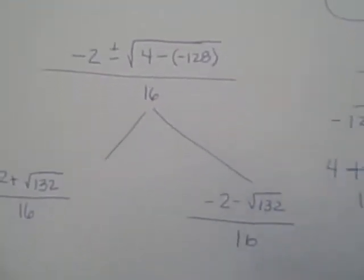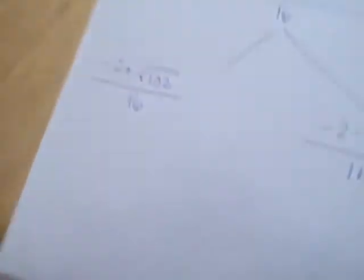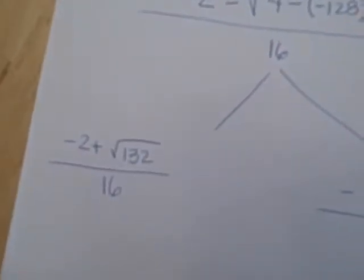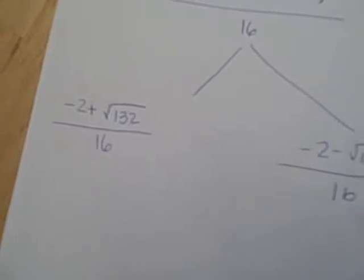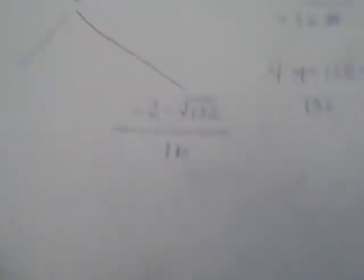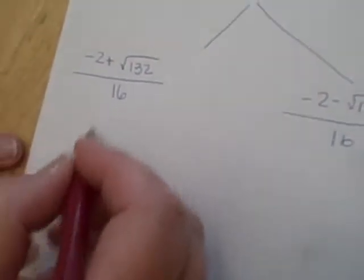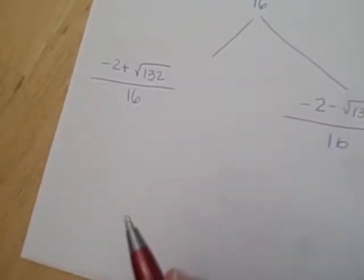And so you've got to decide at this point if you want to have an approximation of the square root, or if you want to leave the square root as it is, if you want to simplify it into radical form. But you can say, okay, square root of 132, anybody remember what that is? That's about 11.4.